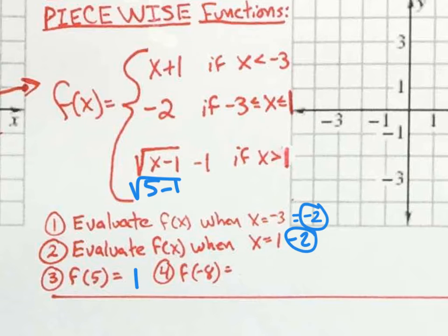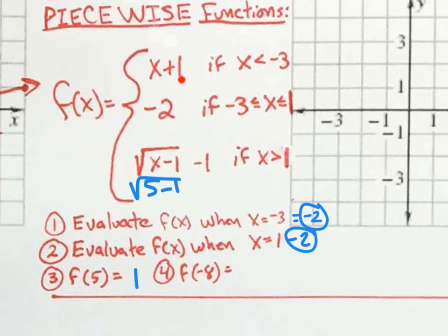For number four, f of negative eight — you want to plug in negative eight. Is negative eight less than negative three? Yes. So this is the piece it satisfies, and you're going to plug it into x plus one. That's negative eight plus one, which equals negative seven. So f of negative eight is negative seven. And that covers all the evaluation problems on the class opener.